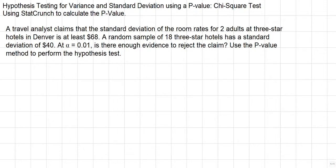Hypothesis testing for variance and standard deviation using a p-value. It's a chi-square test, and we're going to use StatCrunch to calculate the p-value. Our problem is stated as follows.